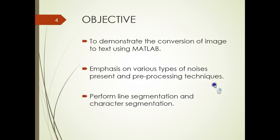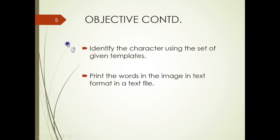The objective of this project is to demonstrate the conversion of an image to text using MATLAB. I am going to talk about the various noises that are present in the image and the preprocessing techniques I use to reduce these noises, perform line segmentation and character segmentation, identify the character using a set of given templates, and then print the words in text format.